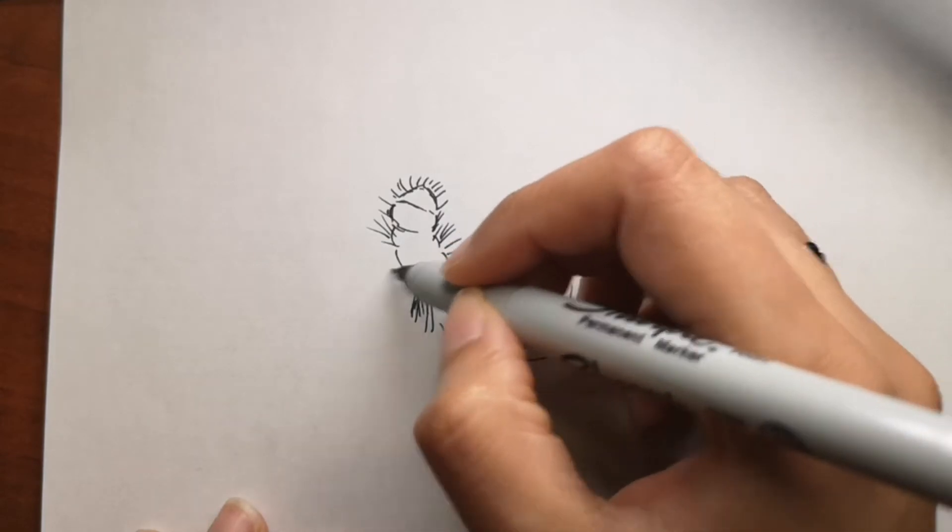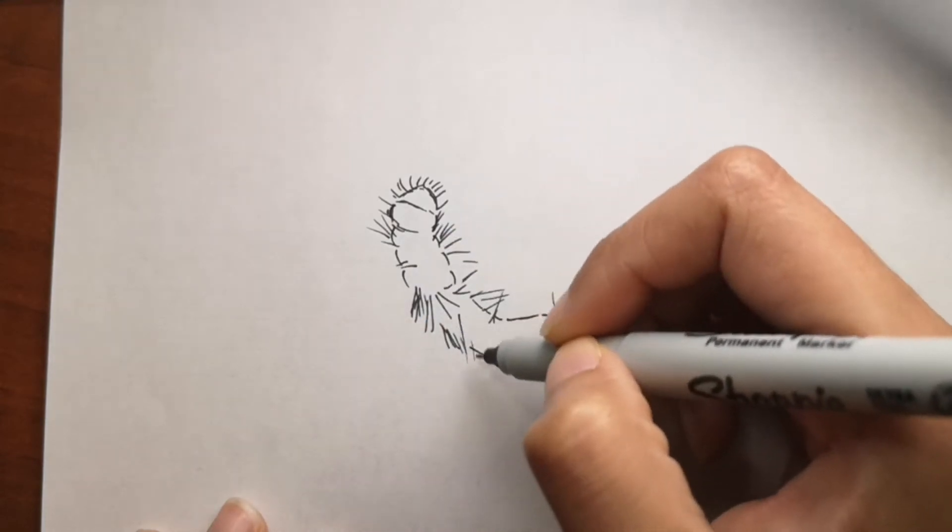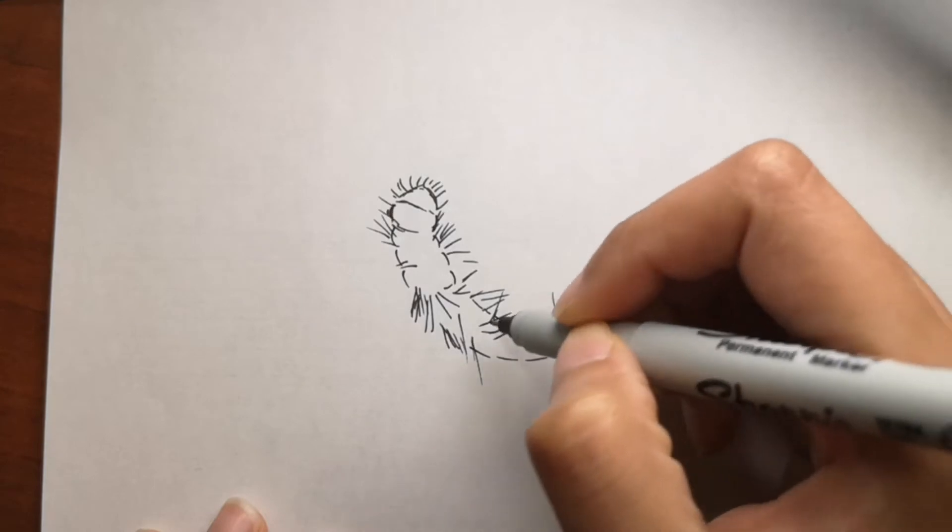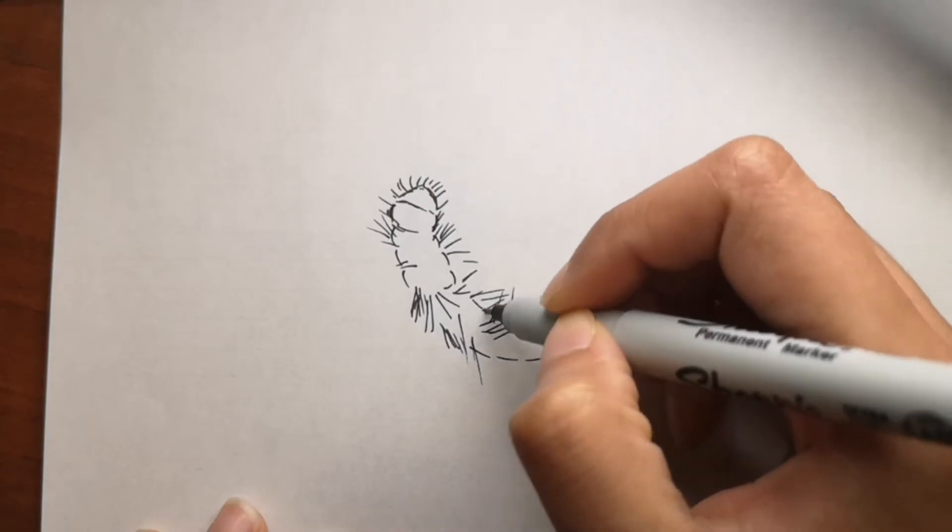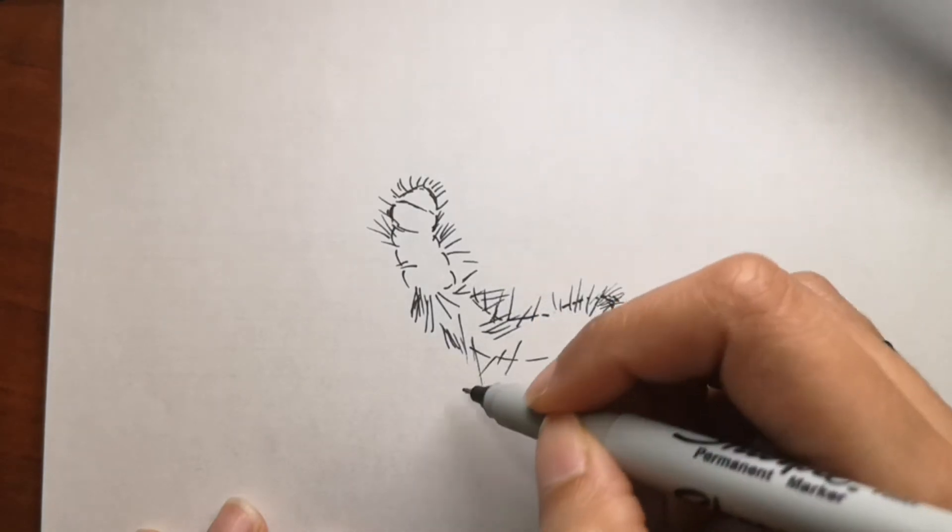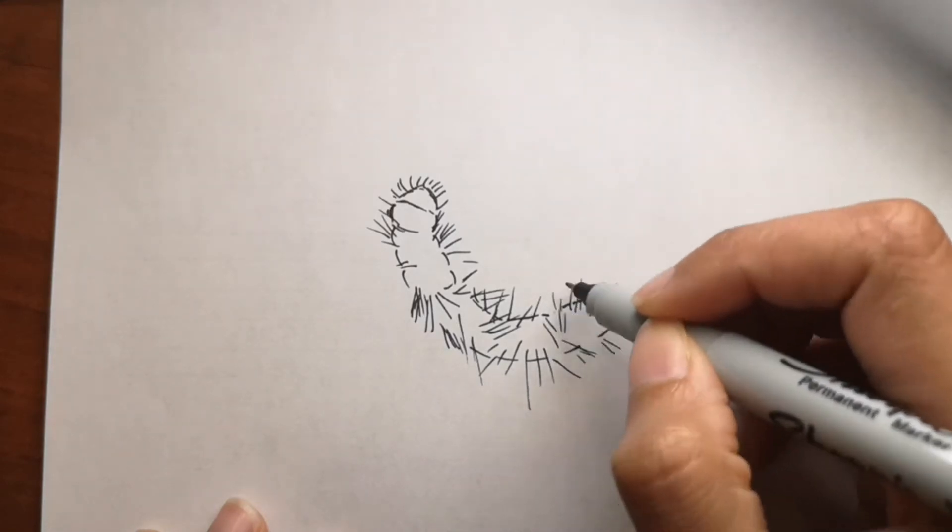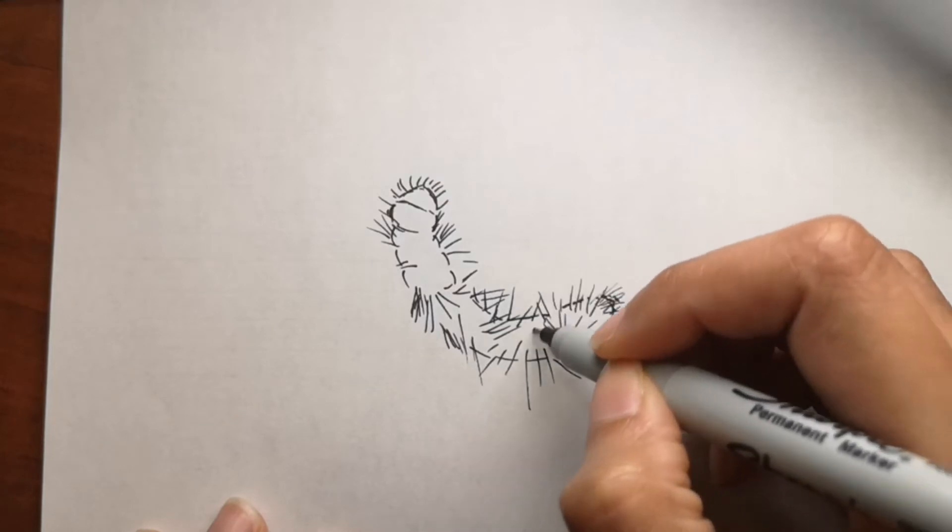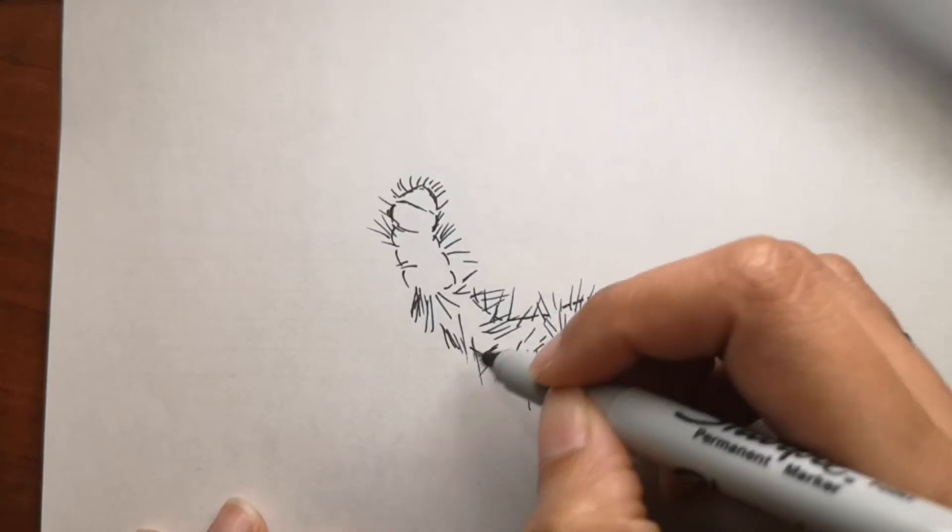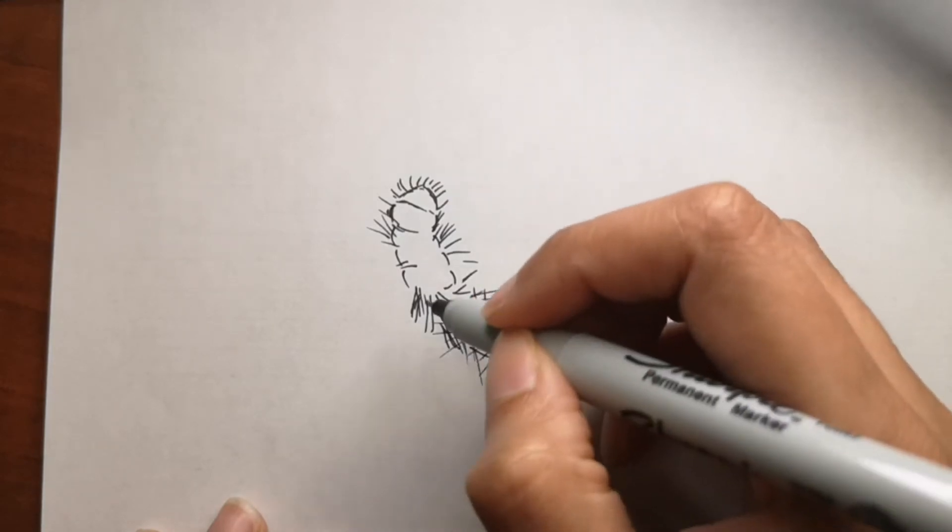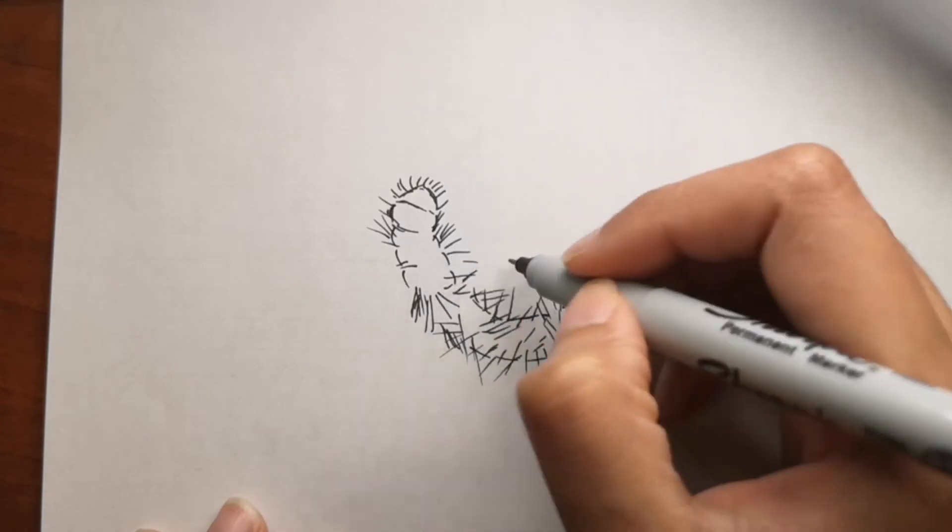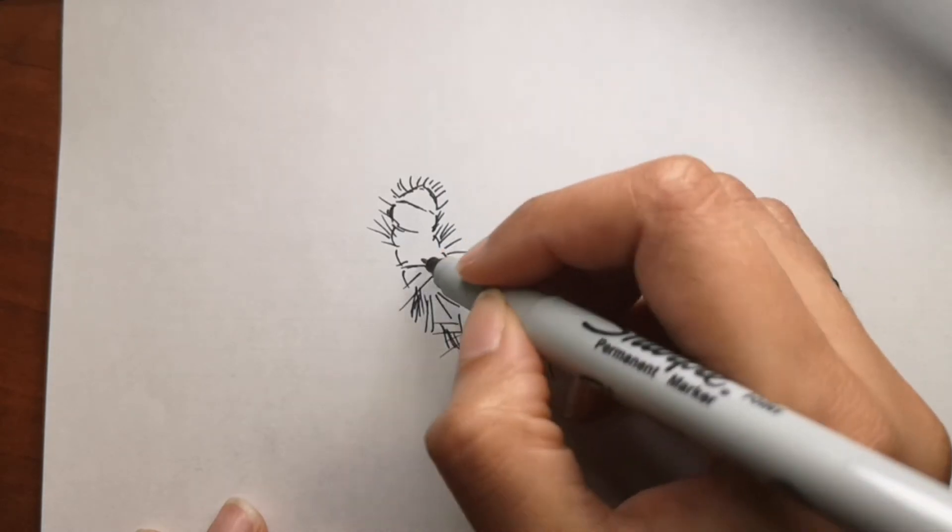But if you touch a caterpillar or if you rub against one, you will get a rash because their fur-like things are kind of allergic, I would say, to humans, so we get a rash or some hives. You have to be careful of that too.